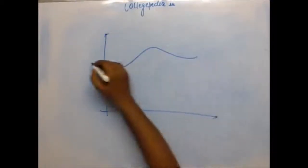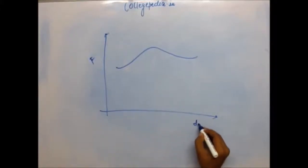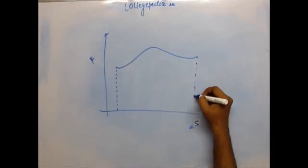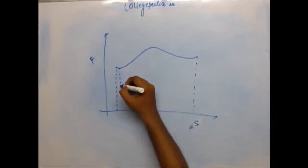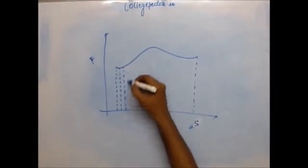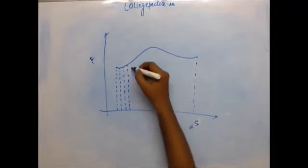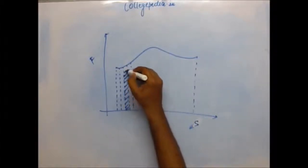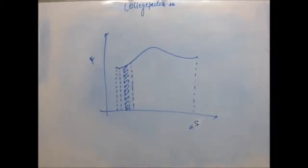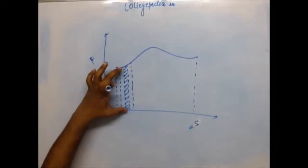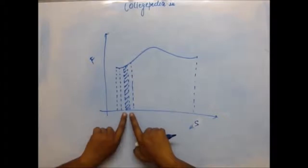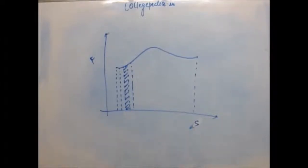Suppose this is any curve of force versus displacement. The area under the curve would be equal to work done, because if we divide this area into numerous narrow columns and we consider one random column, the area of this rectangle would be length into breadth. The length is the y-axis which is equal to force, and the breadth — the width — is displacement, a very narrow one. So we will write it as small change in displacement.